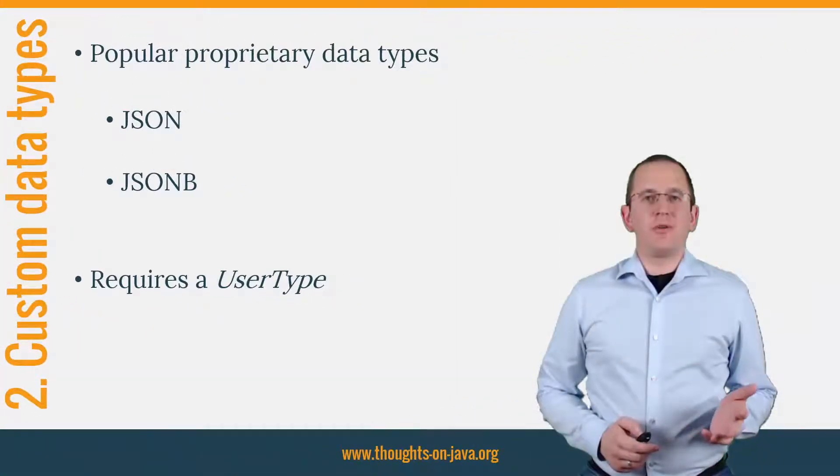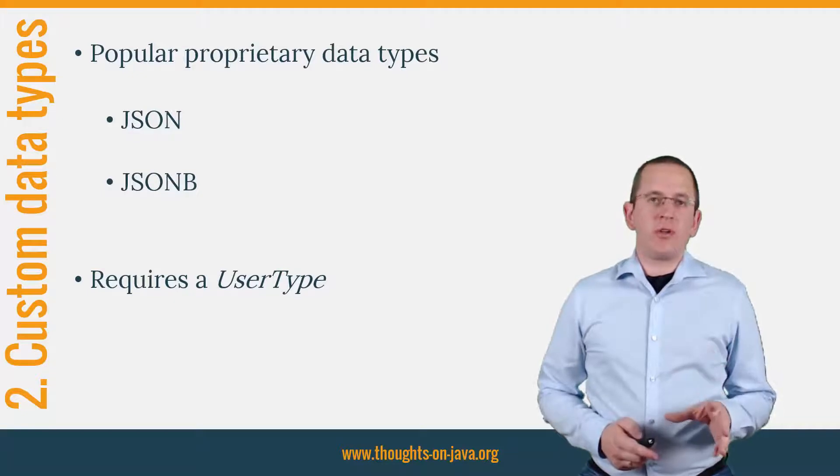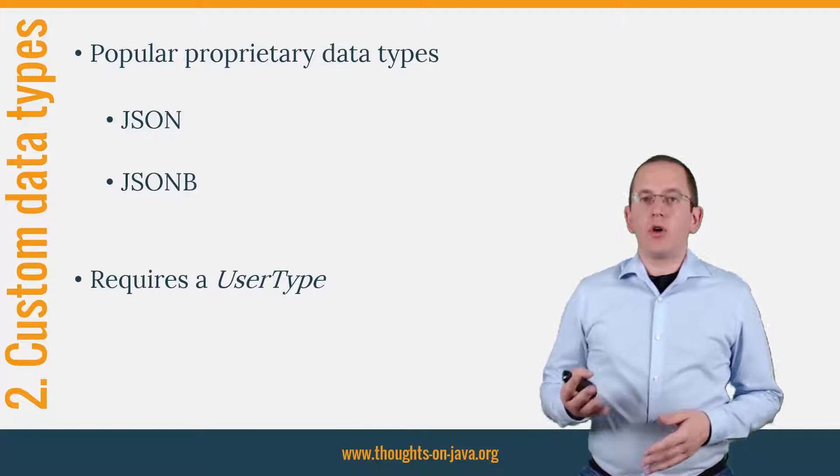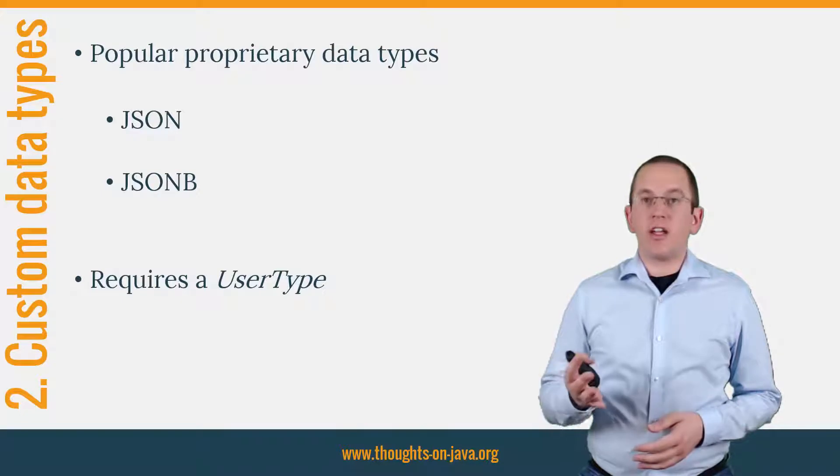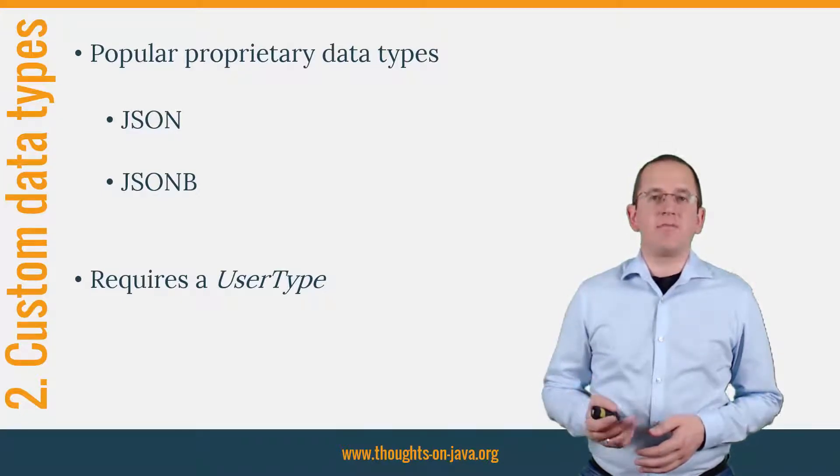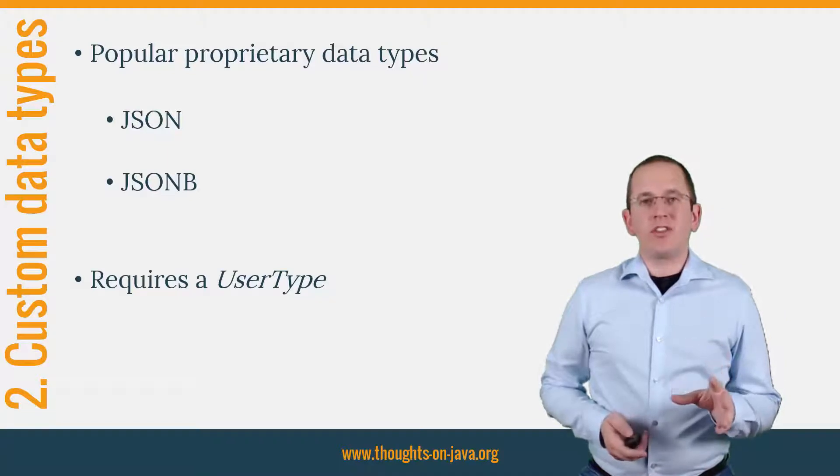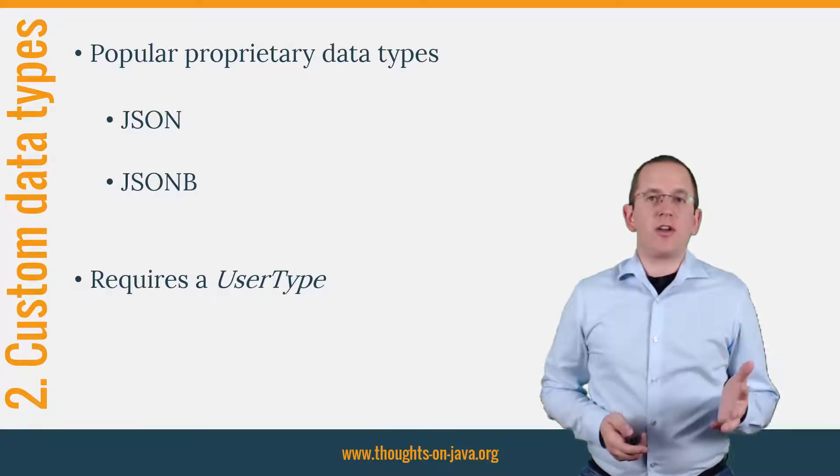2. Use custom data types. PostgreSQL supports a set of proprietary data types, which Hibernate doesn't map by default. Popular examples for that are the JSON and JSONB data types, which allow you to persist and query JSON documents in a PostgreSQL database. If you want to use these types with Hibernate, you need to define the mapping yourself. That requires additional code, but it's not as complicated as it might sound.